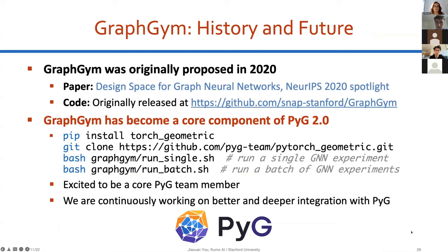Regarding the history and future of GraphGym: it was originally proposed in 2020 with a paper and code released from Stanford. Last year, GraphGym became a core component of PyG in the PyG 2.0 release, and you can try it by simply installing Torch Geometric as usual. I'm excited to be a core PyG team member and we are continuously working on better and deeper integration between GraphGym and PyG.